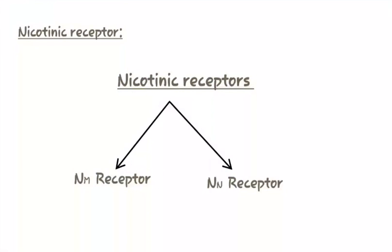Now let us study about nicotinic receptors. Nicotinic receptors are classified into two: first is NM receptors and NN receptors. They are classified on the basis of their location. NM receptors are present at the neuromuscular junction of skeletal muscle, and NN receptors are present on the cell body of autonomic ganglia.